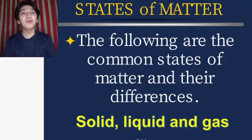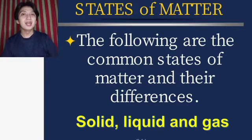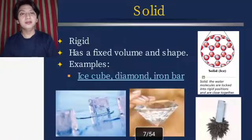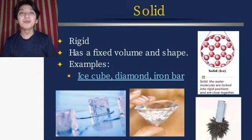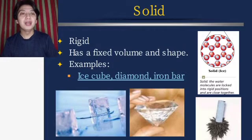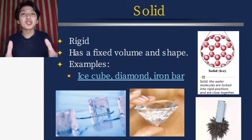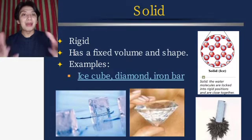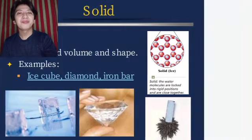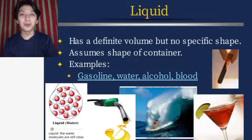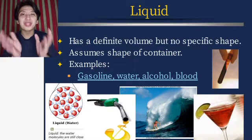The following are the common states of matter and their differences: solid, liquid, gas, plasma, Bose-Einstein condensate, and fermionic condensate. Solid has a rigid, fixed volume and shape. Examples are ice cube, diamond, and iron bar. Anything you can touch that has a definite shape, definite volume, and definite mass — that's a solid.